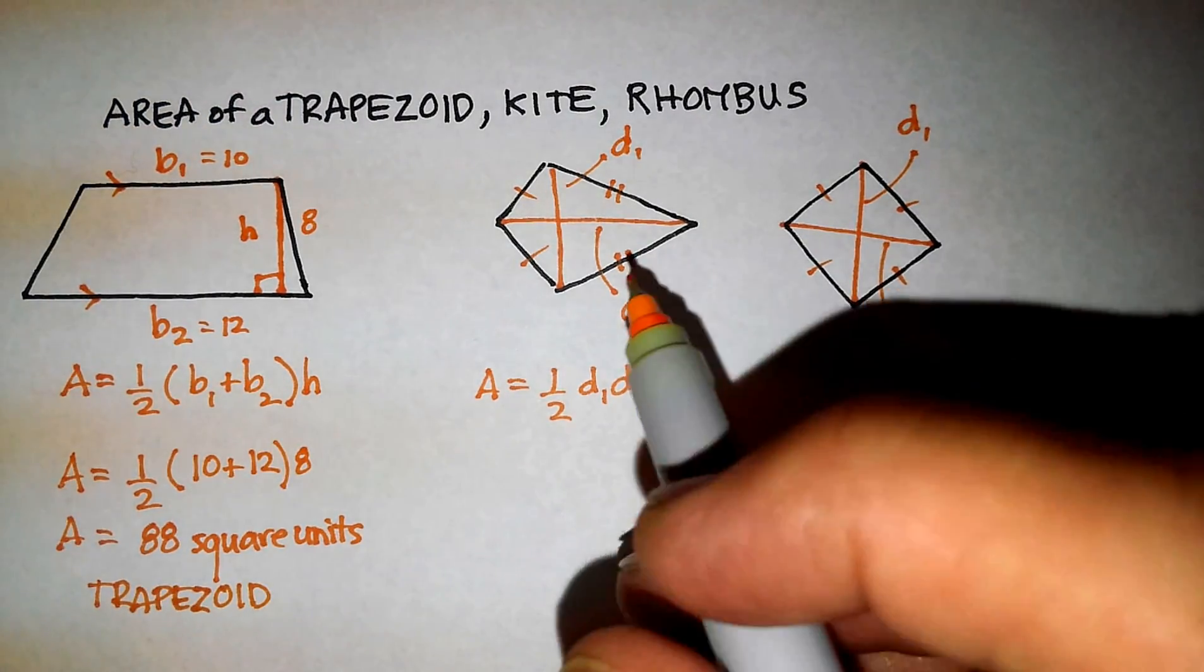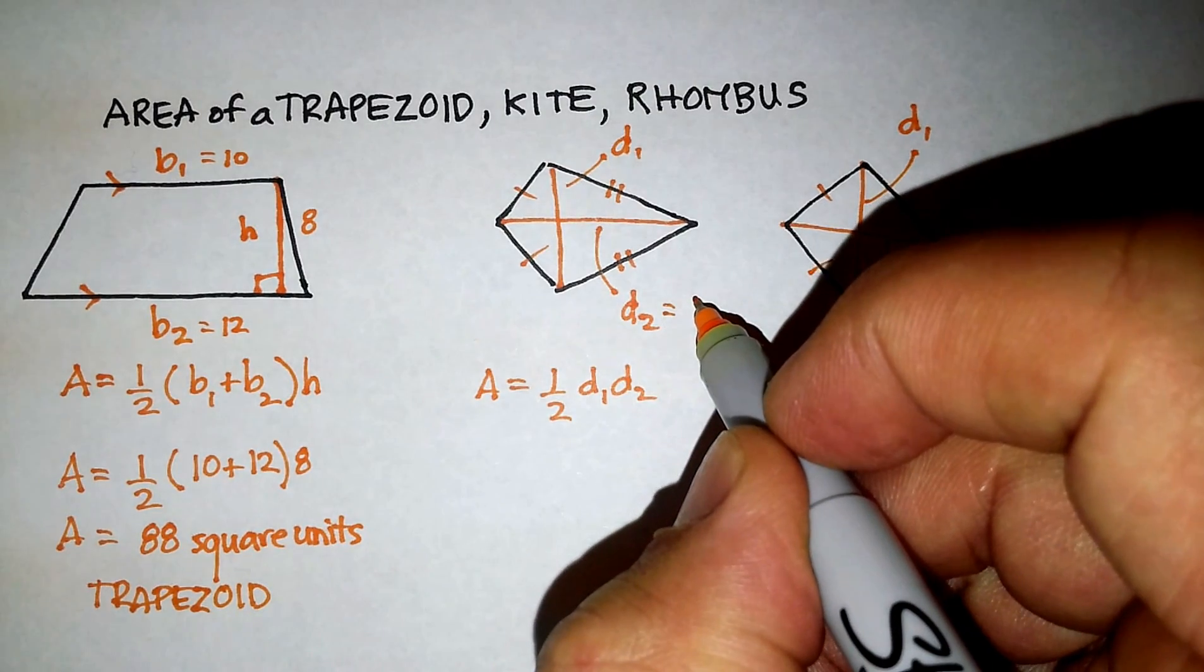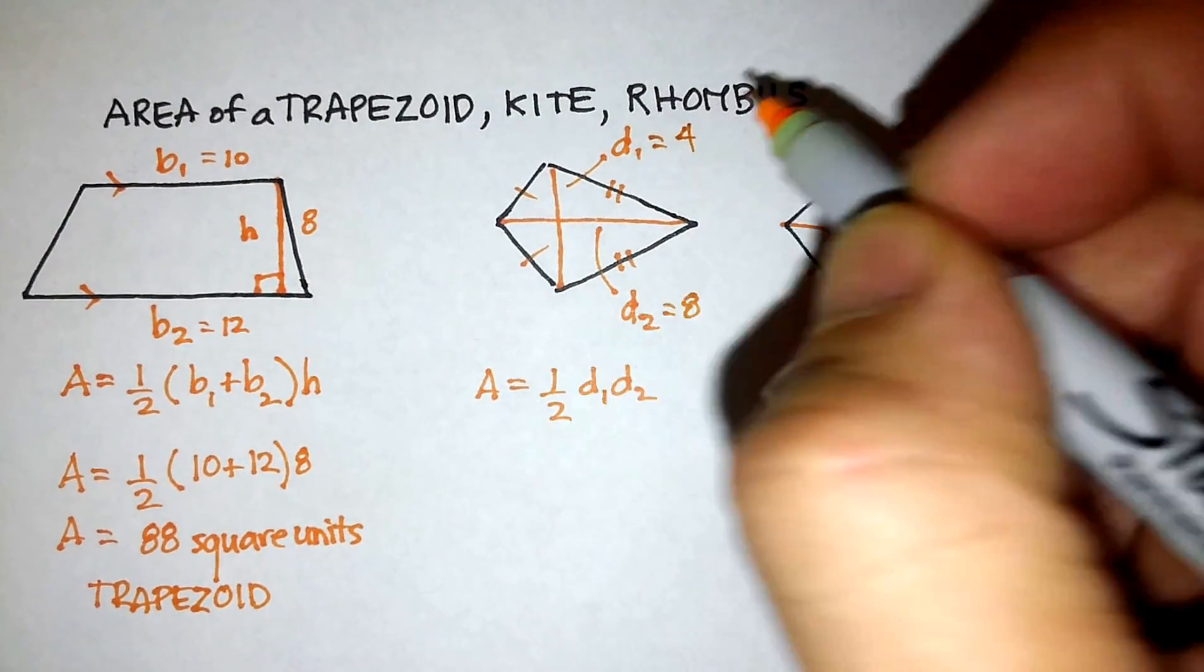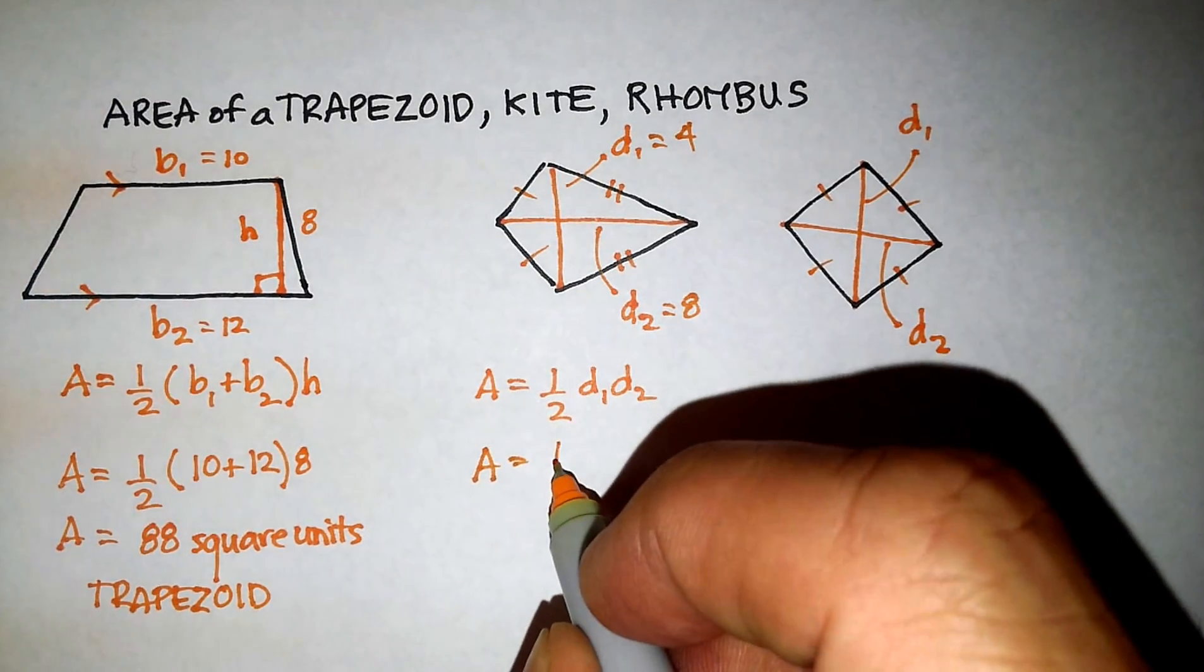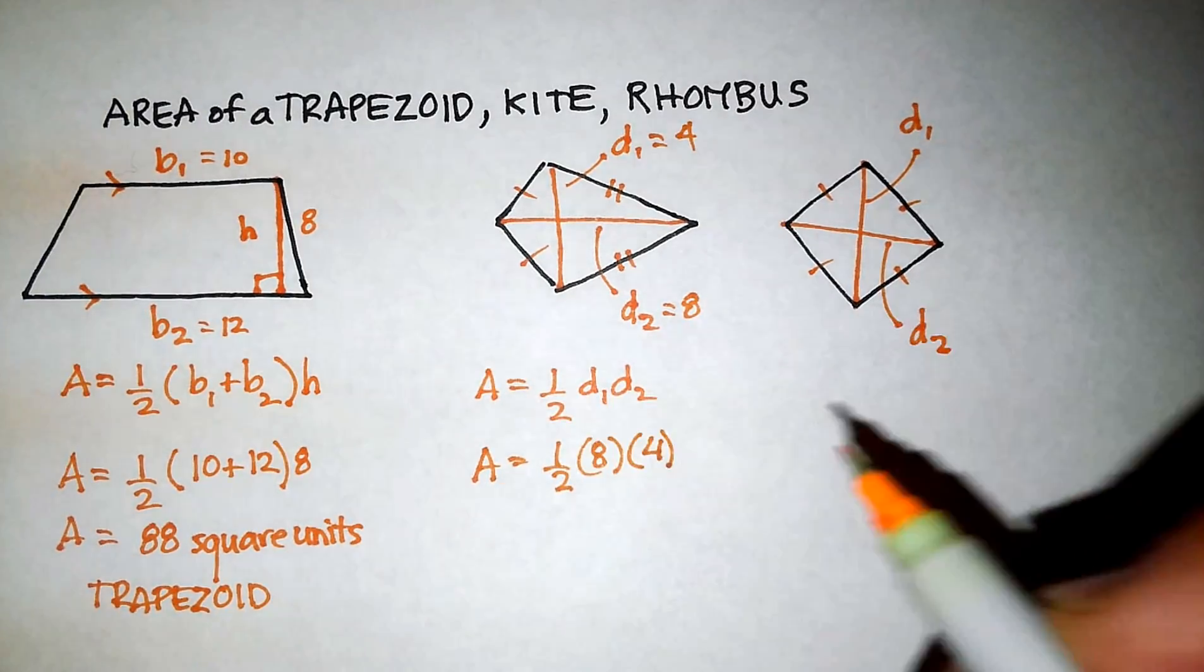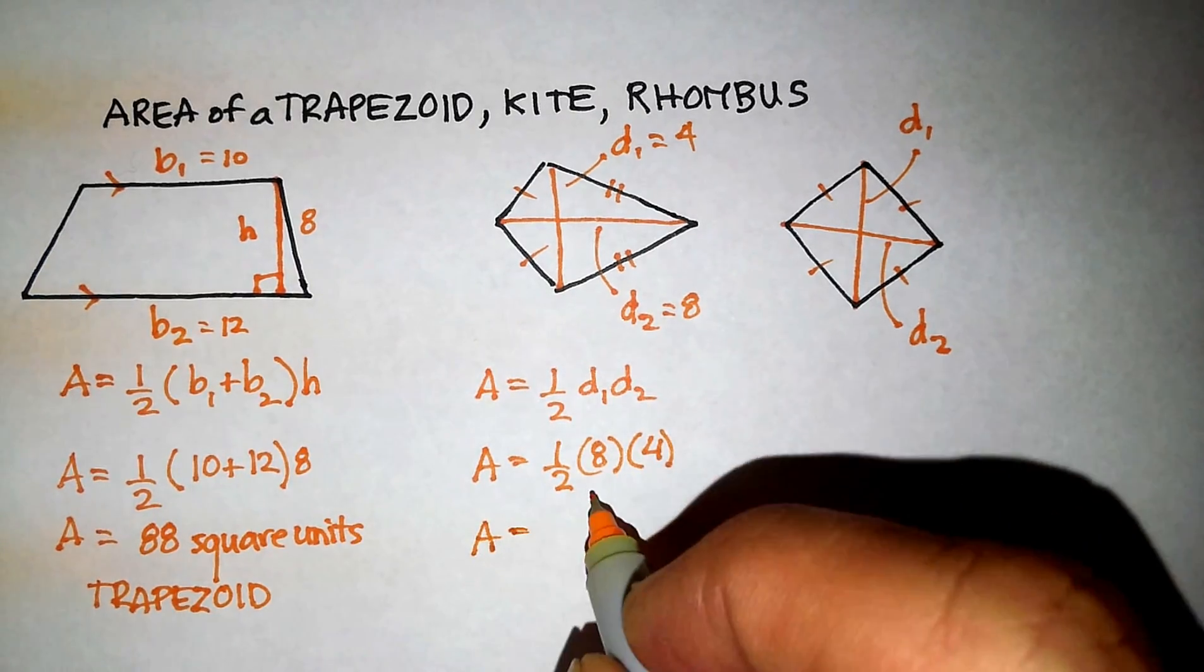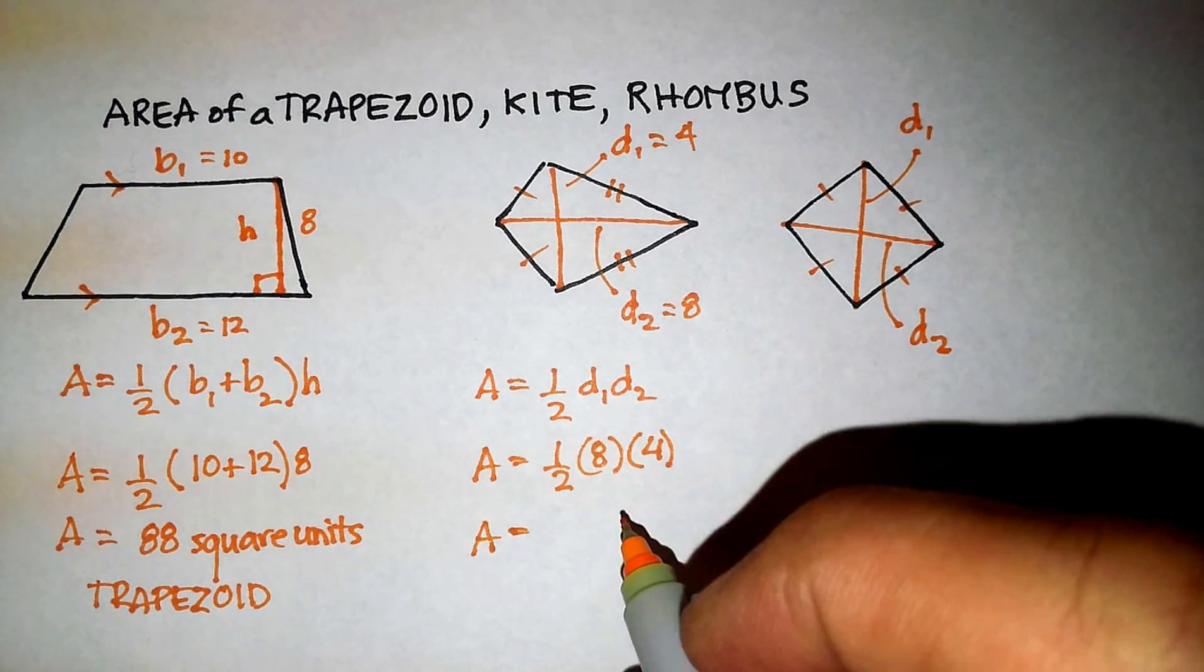This one is really pretty easy. And again, it just depends on what the numbers are. So let's assume that d2 is something like 8 units, and let's assume that d1 is something like 4 units. So the area of this particular kite is 1 half 8 times 4. I actually just flipped those around, but remember the commutative property lets me do that. So area is equal to 1 half of 8 is 4, 4 times 4 is 16.